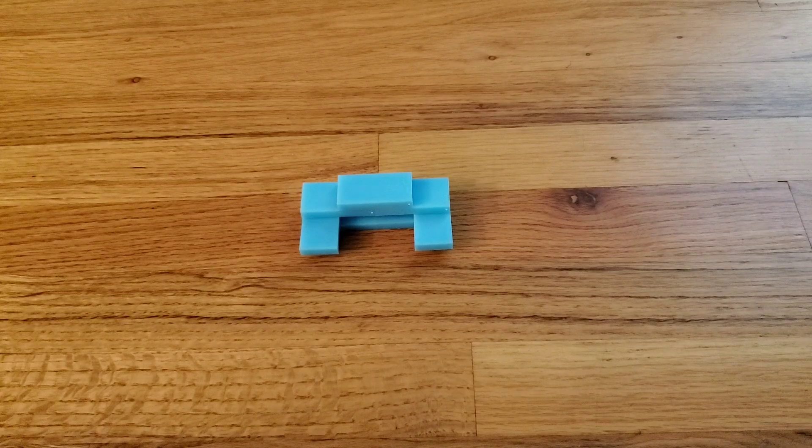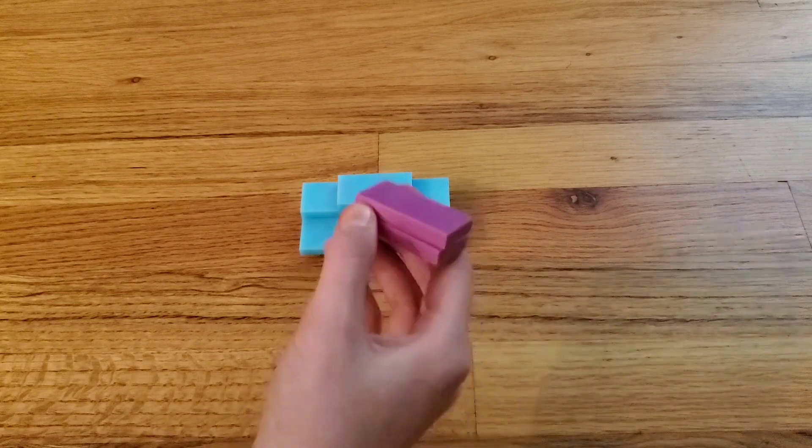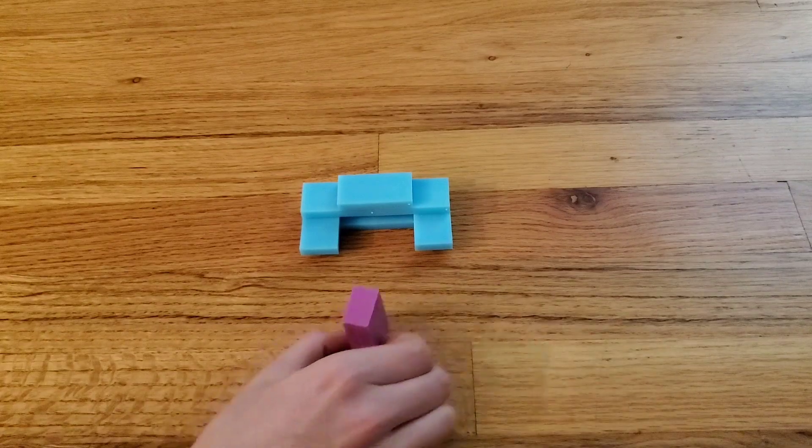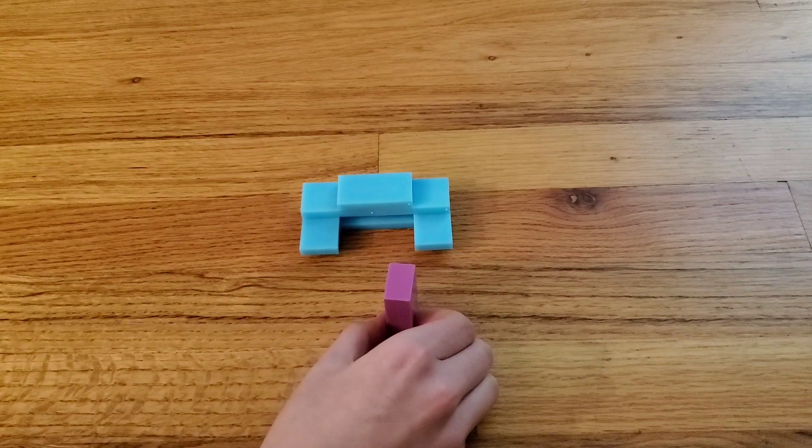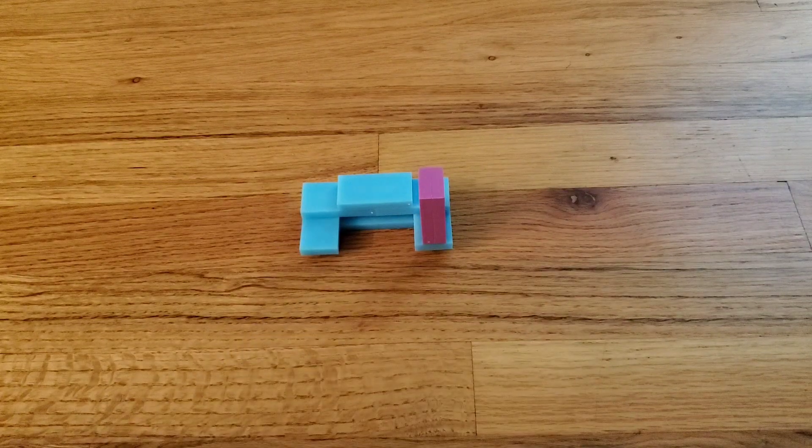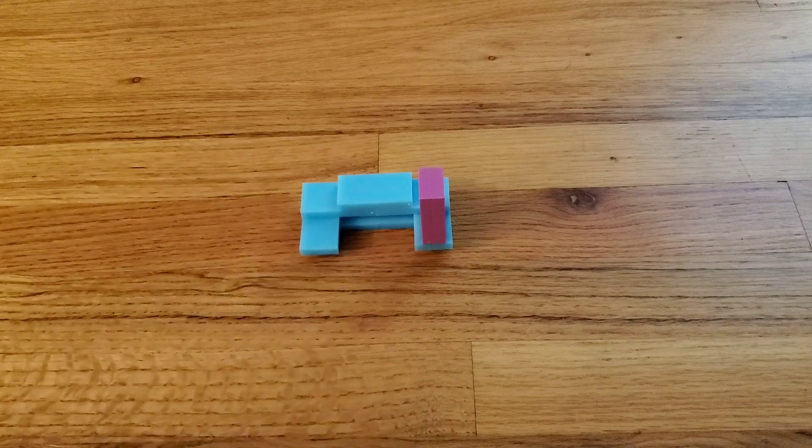Then after that, take two raspberry dominoes and place them on the right arm of the couch like that.